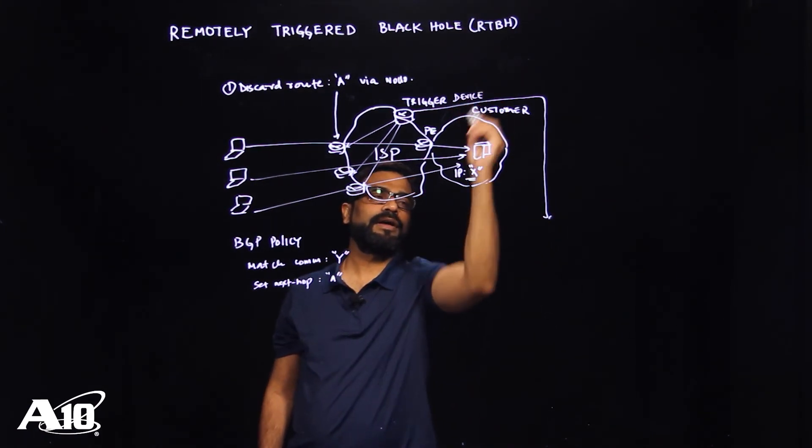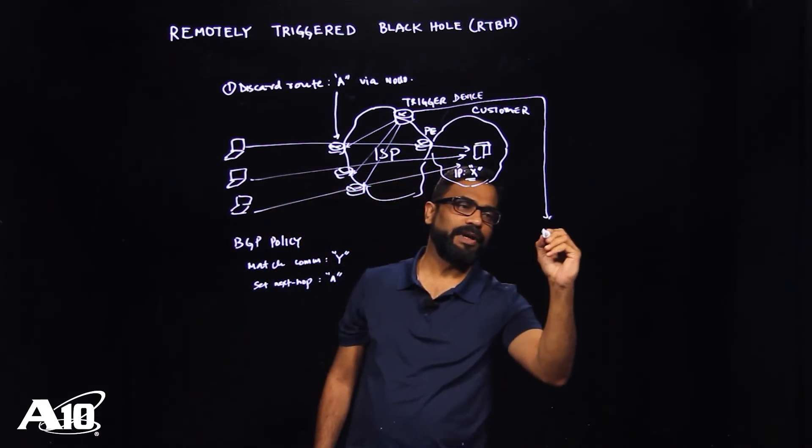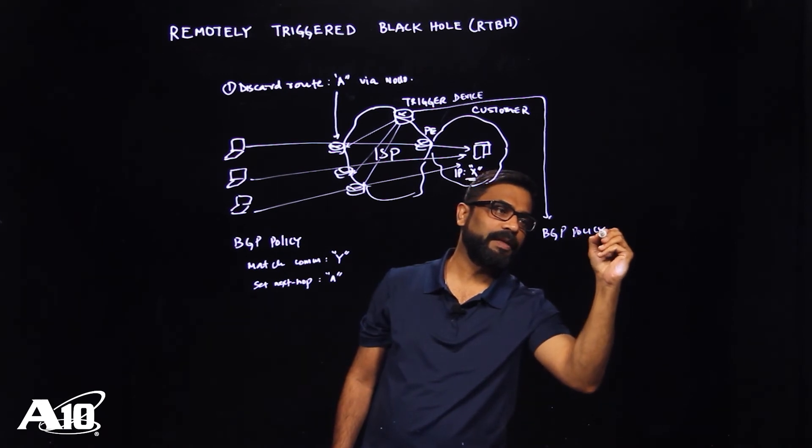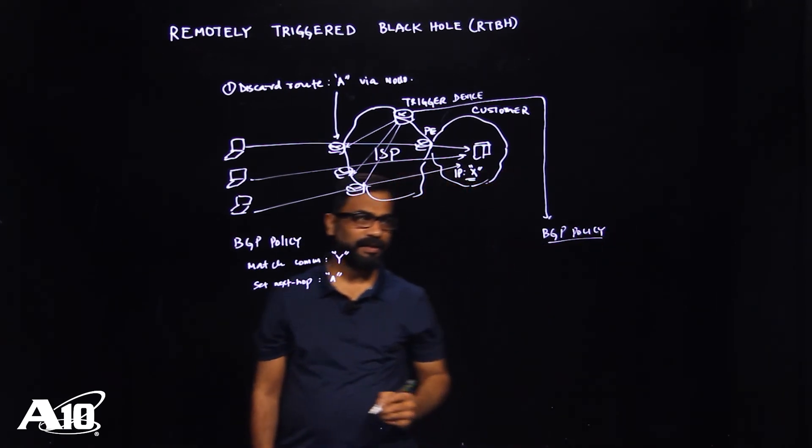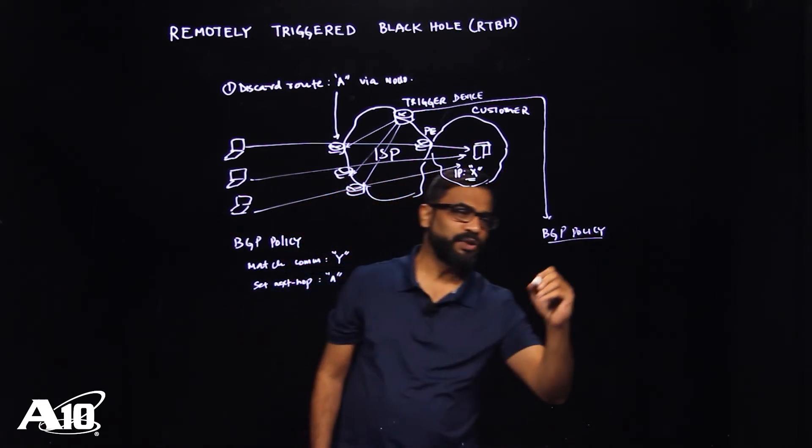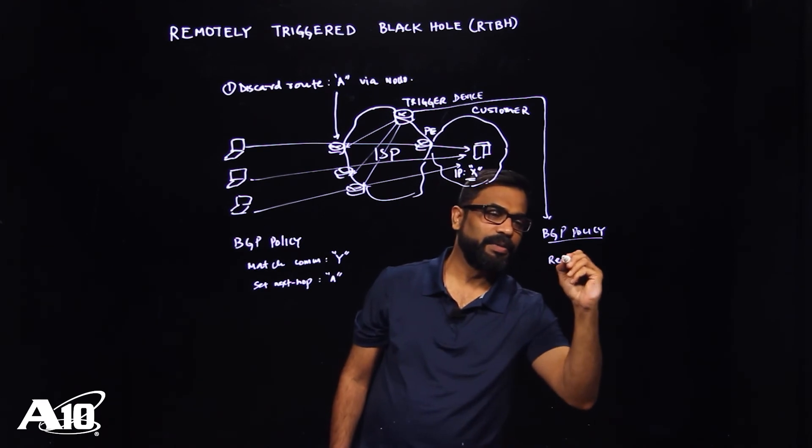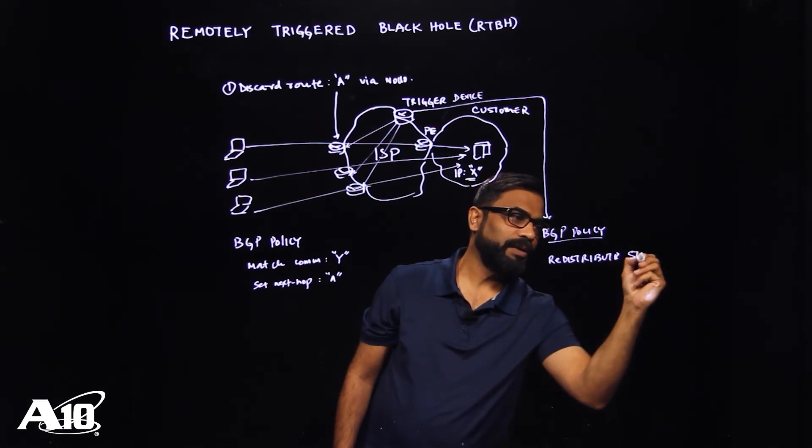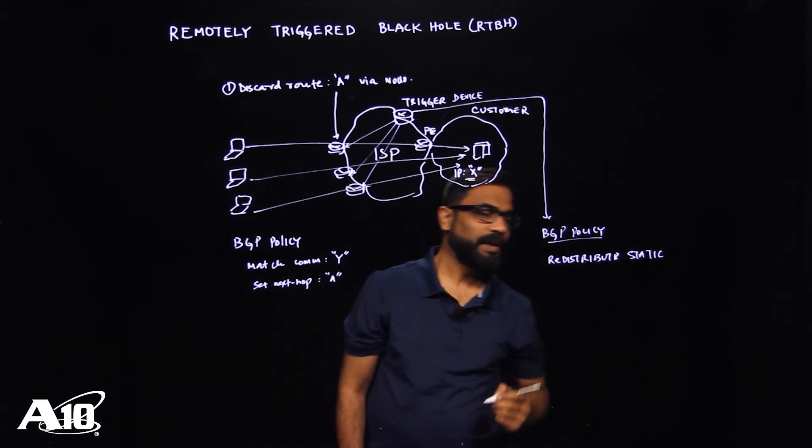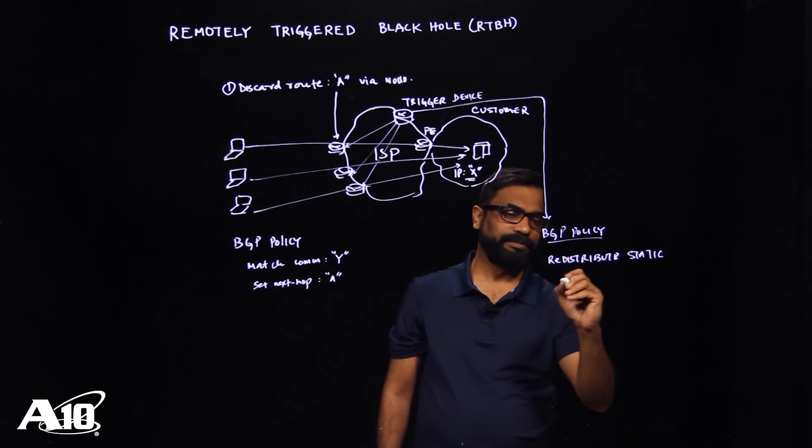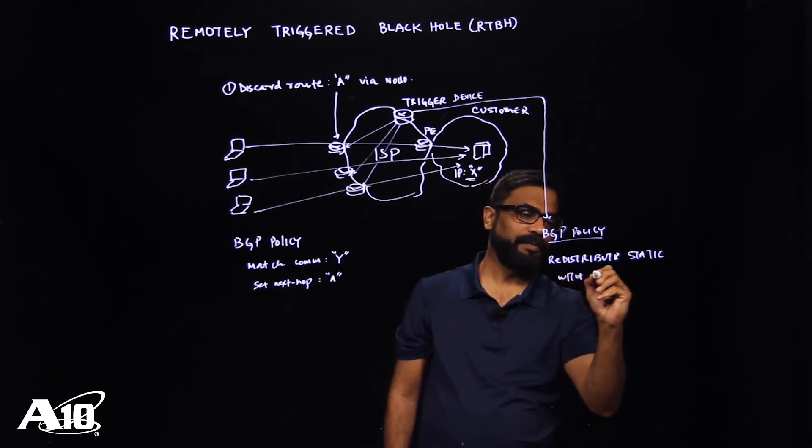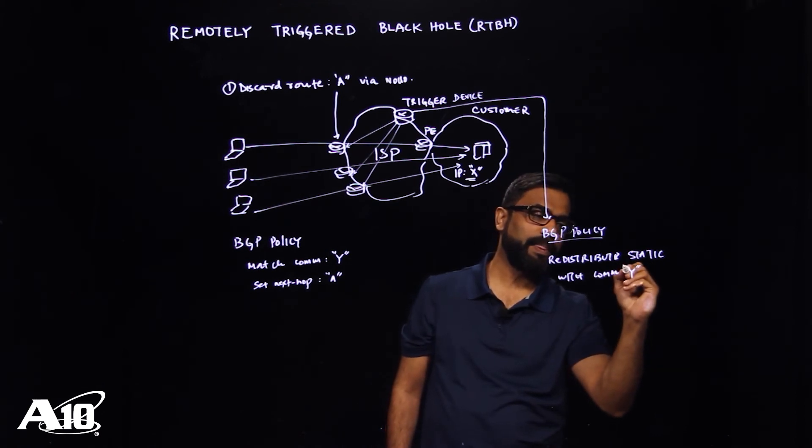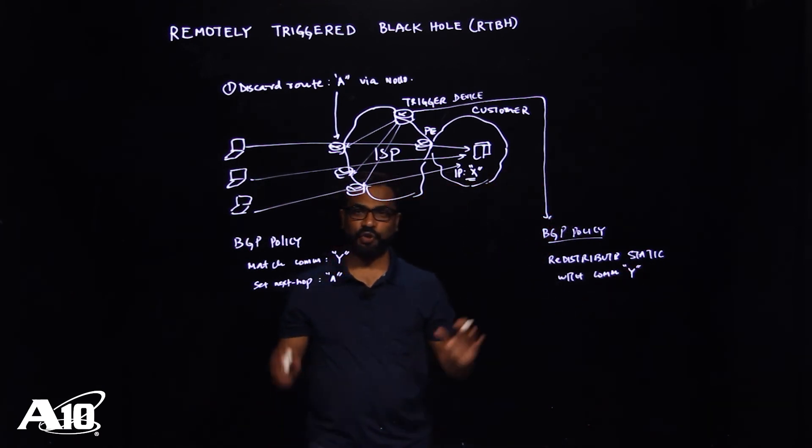This trigger device needs to be configured with another BGP policy. And this policy is going to actually redistribute static route with community that this guy is actually looking for, which is going to be Y.